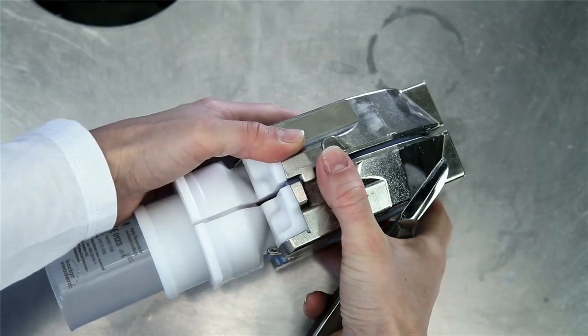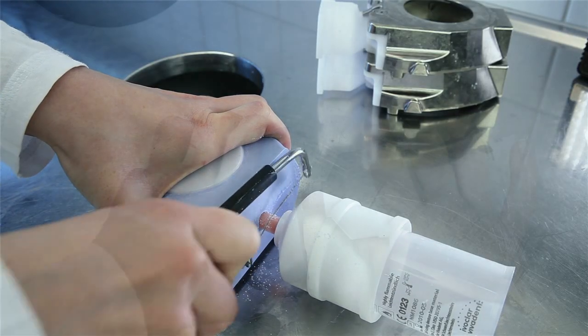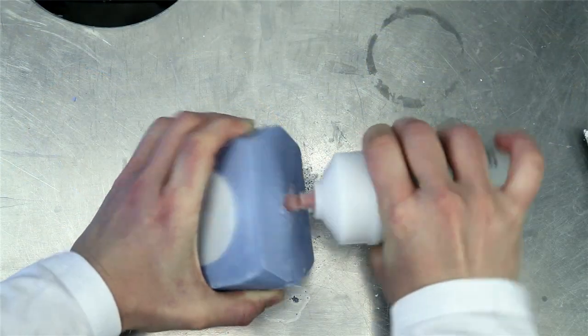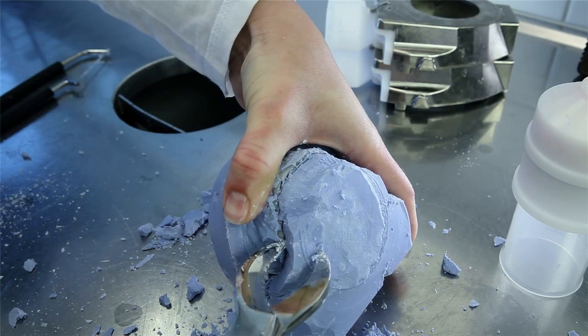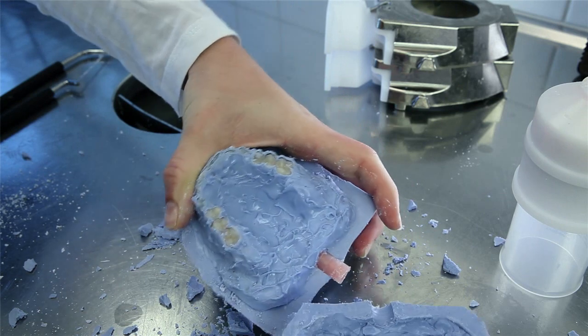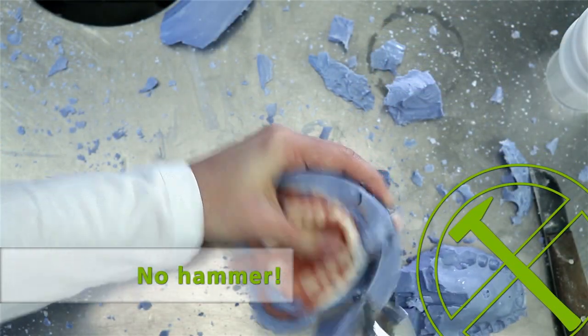Remove the stone core with the capsule and separate the capsule at the sprue using a separating disc, burr, or saw. Divest the denture from the stone core as usual with stone tongs. Do not use a hammer for divestment, since this may damage the dentures.